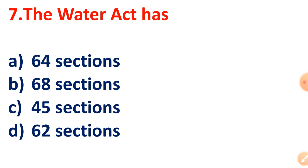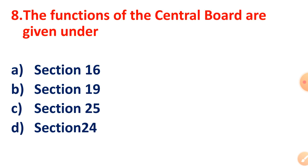Question 7: The Water Act has how many sections? The correct answer is 64 sections. Question 8: The functions of the Central Board are given under which section? The correct answer is Section 19.